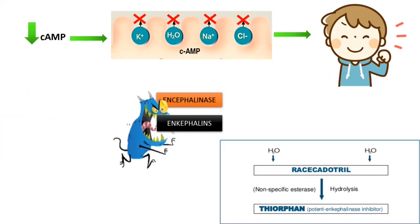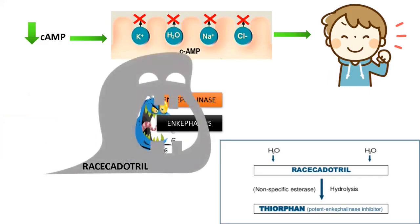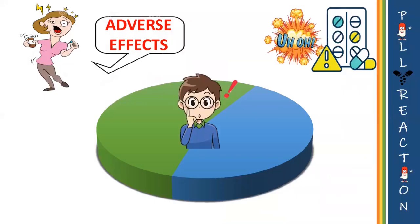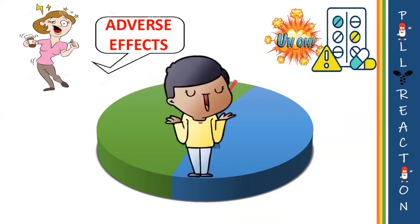This anti-secretory action is, however, short-lived because enkephalins are rapidly degraded by membrane peptidase, that is, encephalinase. Racecadotril is a prodrug that is rapidly hydrolyzed to its active metabolite thiorphan, which is a powerful and selective encephalinase inhibitor that prolongs the anti-secretory action of the drug.